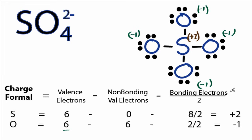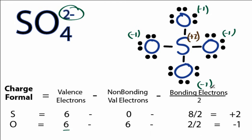If we add up all the formal charges — the minus 1, minus 1, minus 1, minus 1, and plus 2 — we do get a total charge of negative 2. That does make sense, but with formal charges, we want them to be as close to 0 as possible for the atoms.